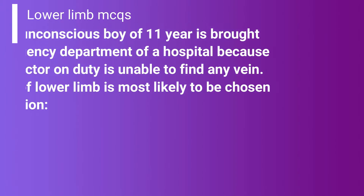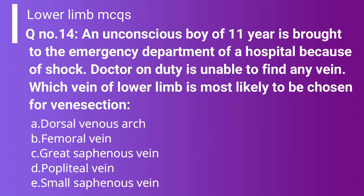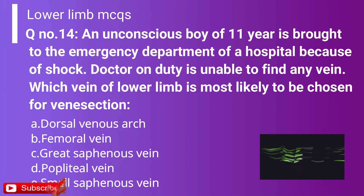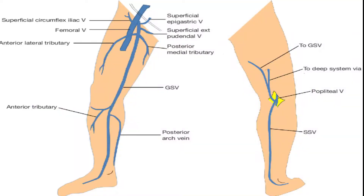Question 14: An unconscious boy of 11 years is brought to the emergency department in shock. The doctor is unable to find any vein. Which vein of the lower limb is most likely to be chosen for venous access? Option A: Dorsal venous arch. Option B: Femoral vein. Option C: Great saphenous vein. Option D: Popliteal vein. Option E: Small saphenous vein. The correct answer is Option C — great saphenous vein — because in this scenario of shock, the great saphenous vein is chosen for venous access.